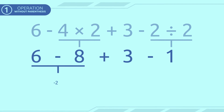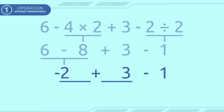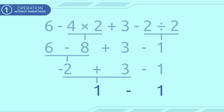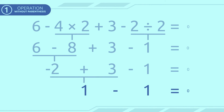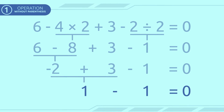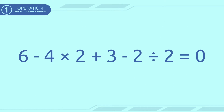Six minus eight equals minus two. Minus two plus three equals one. And one minus one equals zero. The answer is zero. Easy, isn't it?